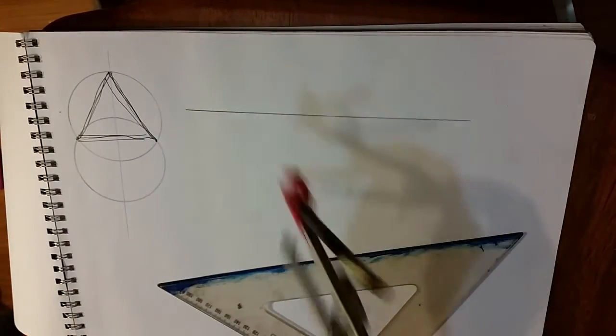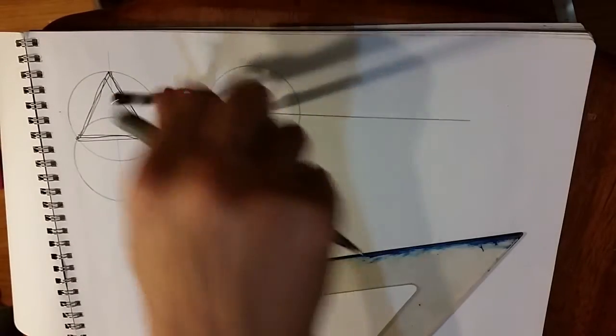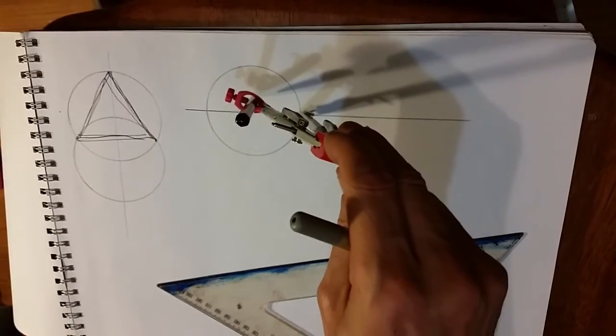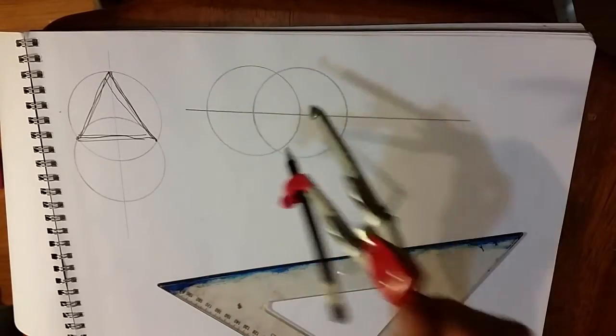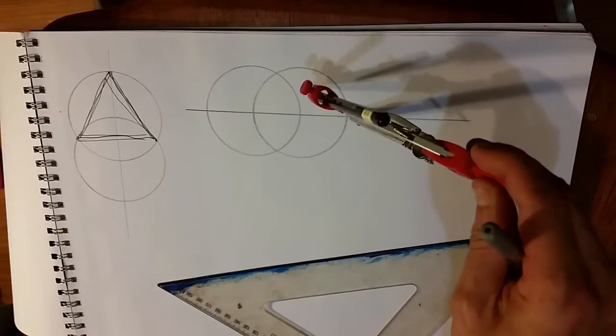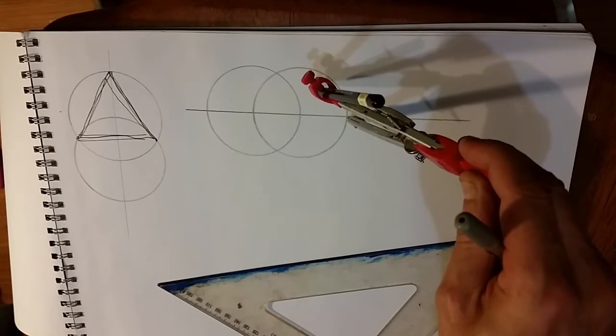Horizontal construction line with the Vesica. Without changing the compass, one more circle to do a double Vesica Pisces.